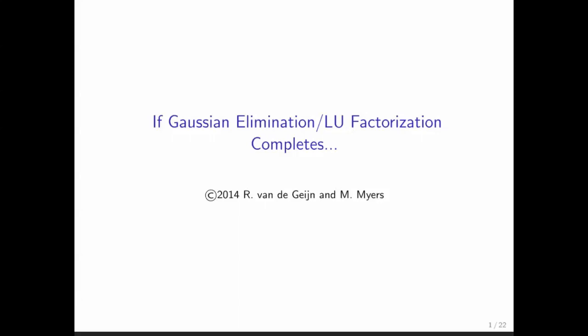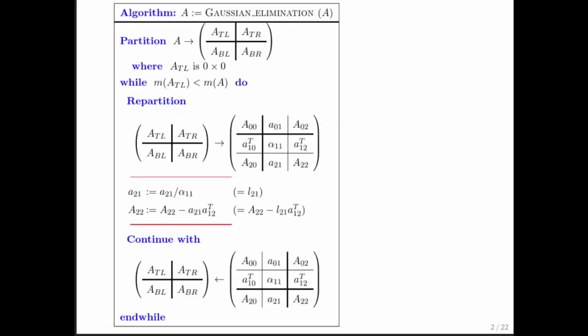Let's start by looking at what it means when Gaussian elimination, or LU factorization, completes. Here we have the algorithm for Gaussian elimination, and the algorithm for LU factorization is identical. This algorithm can fail if we ever divide by zero — if a diagonal element used to compute the multipliers is ever zero, even if it only becomes zero during computation. But if a zero is never encountered, then the algorithm completes and computes an LU factorization.